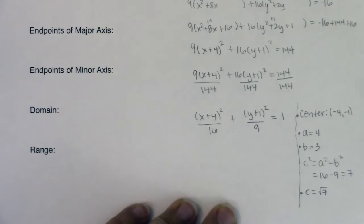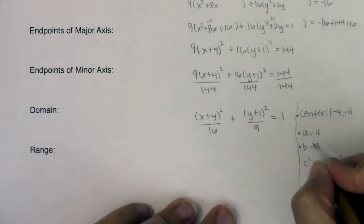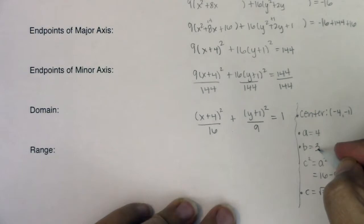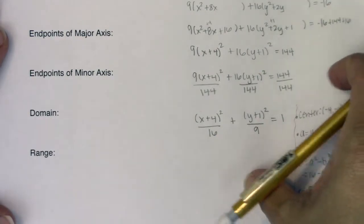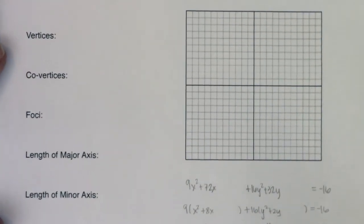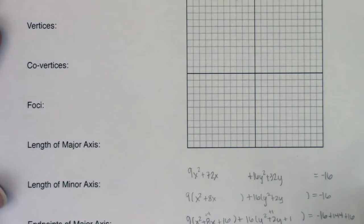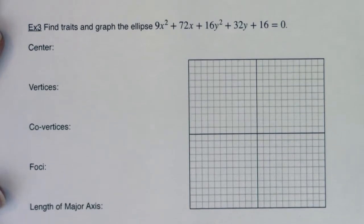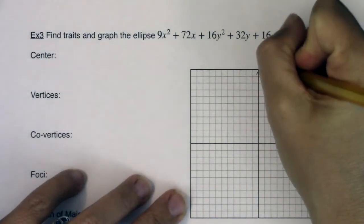Since a is 4 and it was under the x term, my major axis is horizontal and my minor axis is vertical. My center is at negative 4, negative 1. Let me label and scale the axes so we can see everything clearly and start graphing this out.